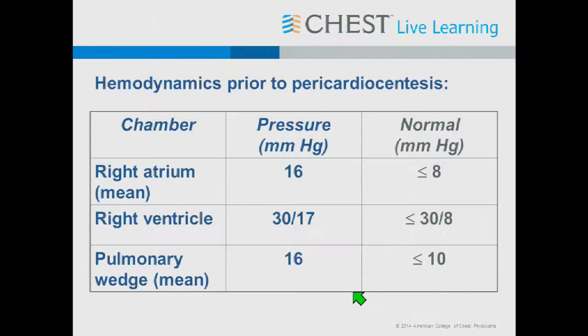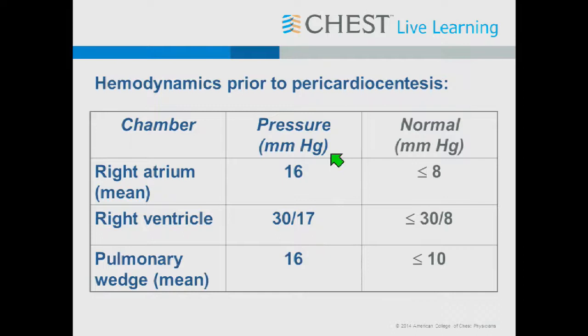Prior to pericardiocentesis, this patient had elevated and equalized diastolic pressures: right atrial pressure 16, right ventricular diastolic pressure 17, wedge 16, and pericardial pressure approximately 20. After drainage, pressures returned to normal. Beck's triad: jugular venous distension, hypotension with a paradoxical pulse, and a small quiet heart — suggesting tamponade. Urgent echocardiography and pericardial drainage is the correct answer.